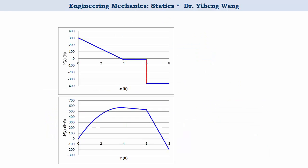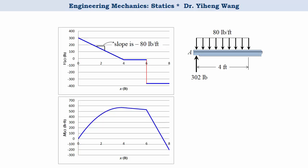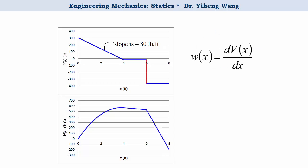Looking at the shear force diagram, it is made up of three parts. Two of the lines are horizontal, but the first one decreases from V equals 300 pounds at x equals 0 to V equals negative 20 pounds at x equals 4 feet — a slope of negative 80 pounds per foot. For the first 4 feet, there is a distributed load with intensity w of negative 80 pounds per foot (negative because it points downward). Since load intensity is force over length, the slope of the shear force diagram equals the load intensity. There is no distributed load elsewhere, so the slope is zero and we see two horizontal lines.